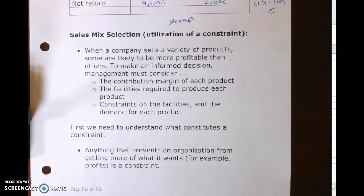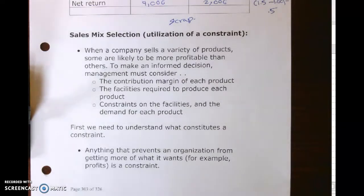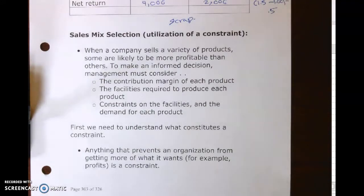We have a similar situation in terms of sales mix. We have different products, and maybe we don't have enough time on machines, or enough labor, or some other constraint — something that prevents us from making all the products that our customers want. We need to choose those products that give us the most contribution margin — remember, contribution margin is sales minus variable costs — per unit of the constrained resource. In the part-time job example, the constrained resource is your time.